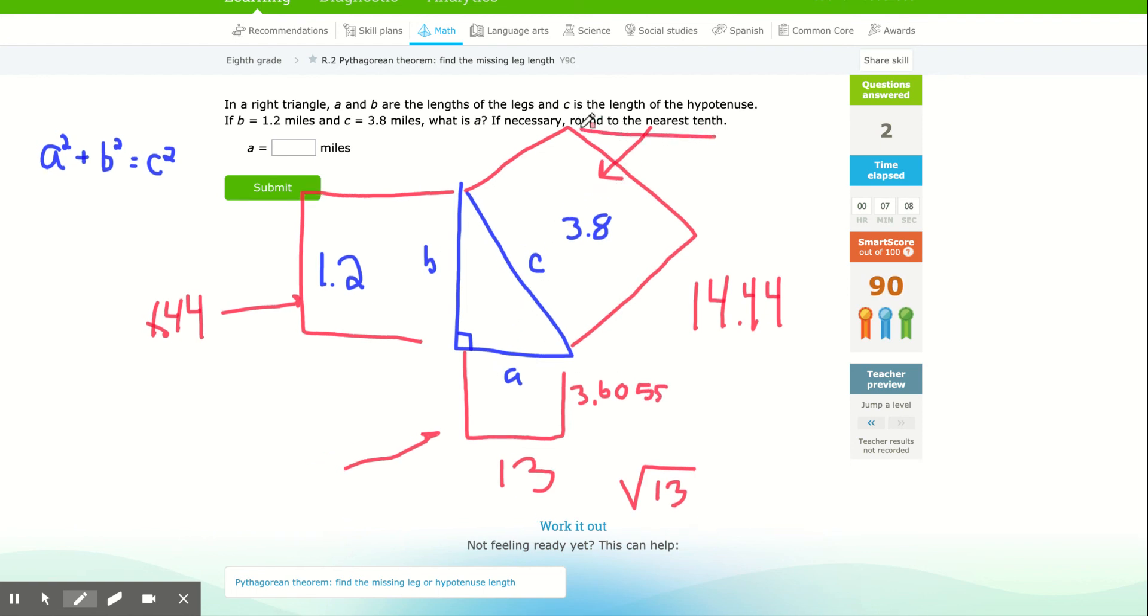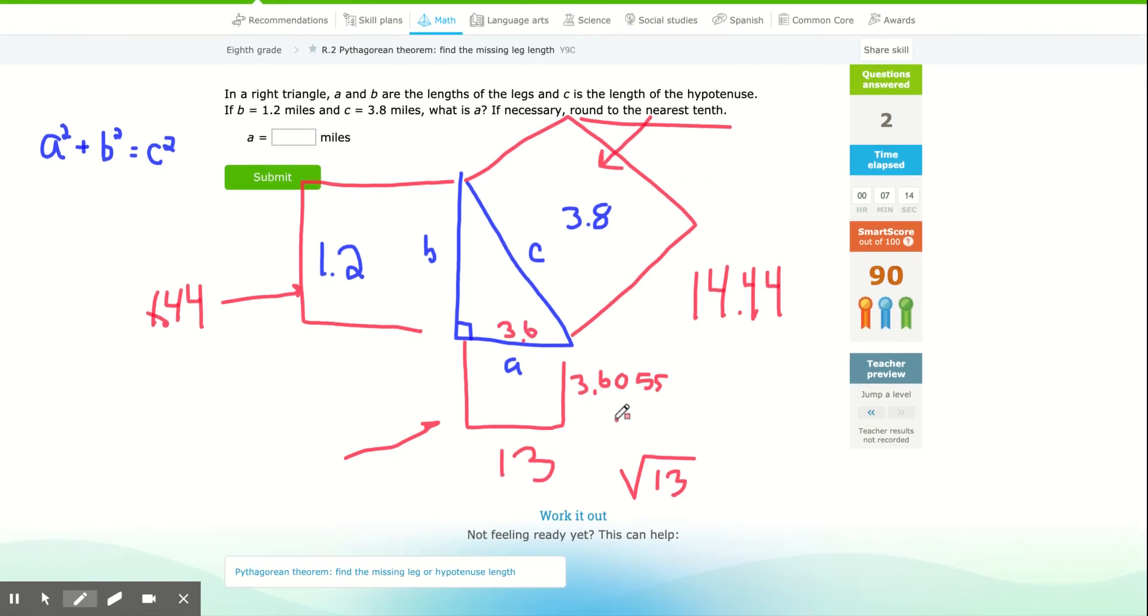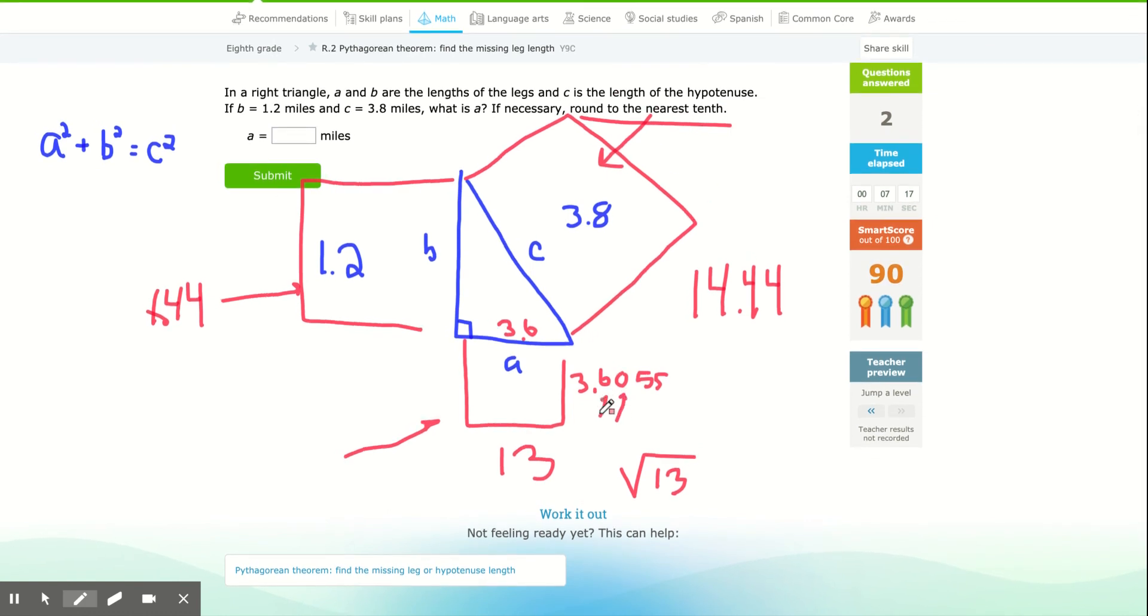But it says round to the nearest tenth. So if I round to the nearest tenth, it'll be 3.6, because that's a zero. I don't change the tenth spot, and it'll be 3.6.